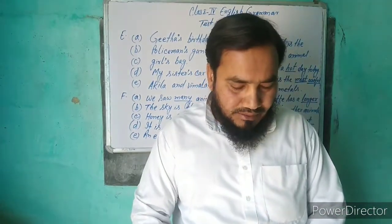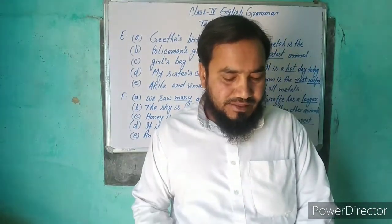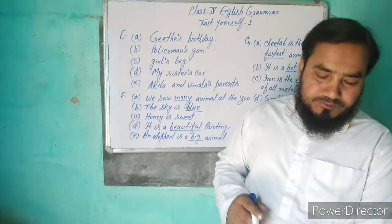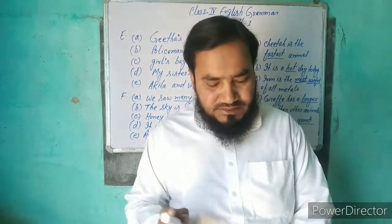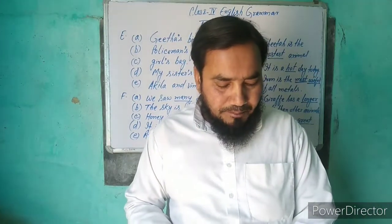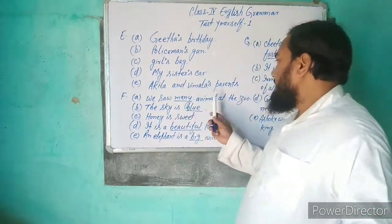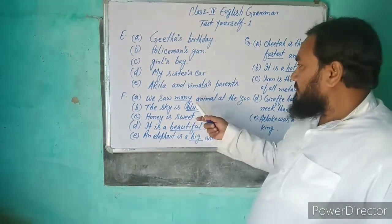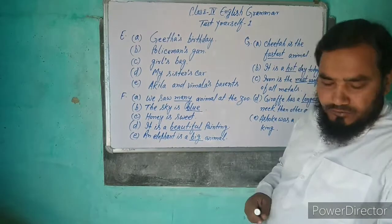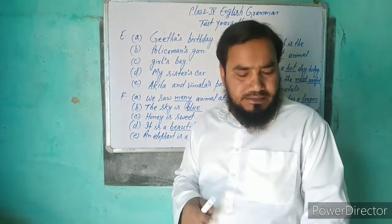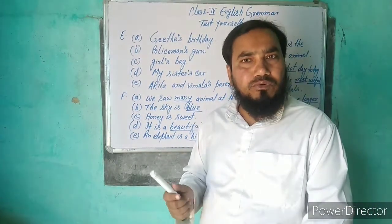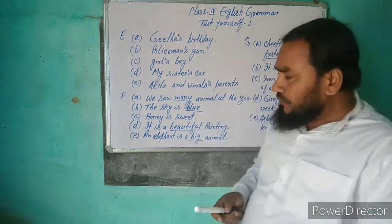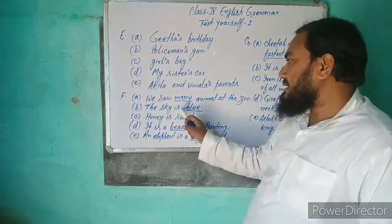اس کے بعد F ہے: Fill in the blanks with suitable adjectives۔ A ہے: We saw ___ animals at the zoo. Options ہیں much, many۔ تو کیا ہوگا؟ Many۔ We saw many animals at the zoo۔ B ہے: The sky is ___. Option ہے blue, pink۔ Sky blue ہوتا ہے، تو blue fill ہوگا۔ The sky is blue۔